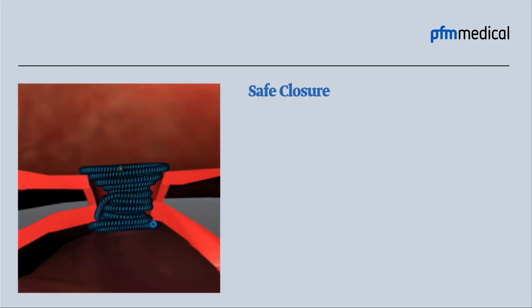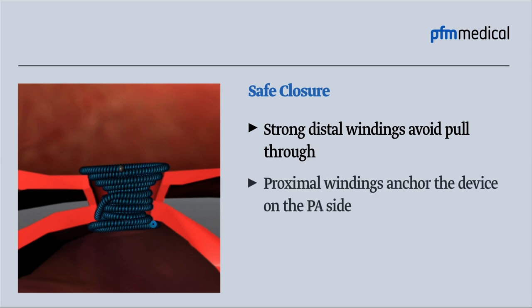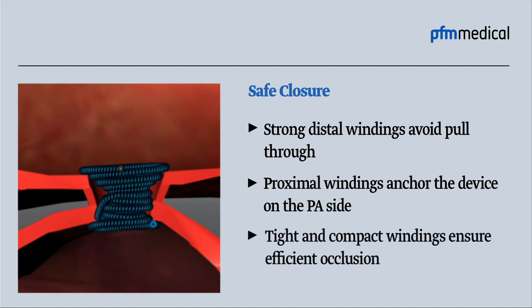Safe closure. Strong distal windings avoid pull-through. Proximal windings anchor the device on the pulmonary artery side, while tight and compact windings ensure efficient occlusion.